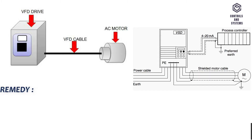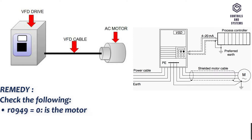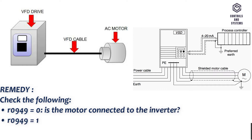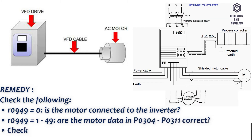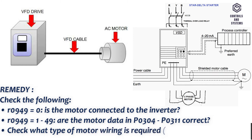Remedy: Check the following. R0949 equals 0: is the motor connected to the inverter? R0949 equals 1 to 49: are the motor data in P0304 to P0311 correct? Check what type of motor wiring is required — star or delta.